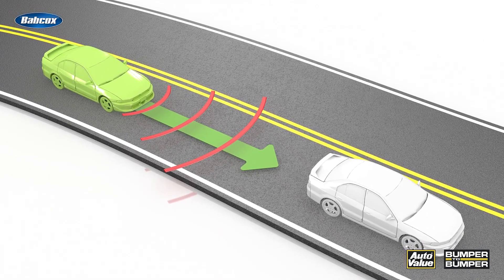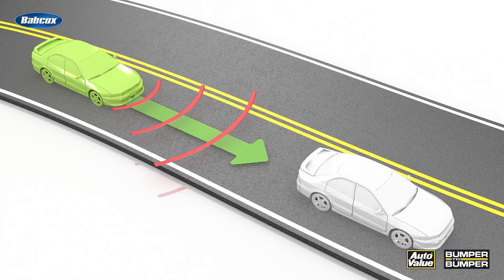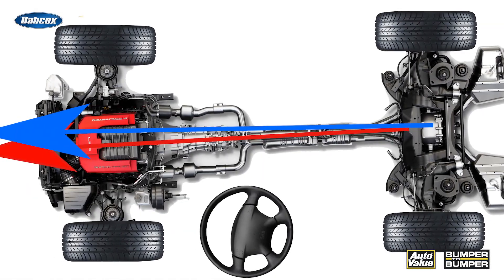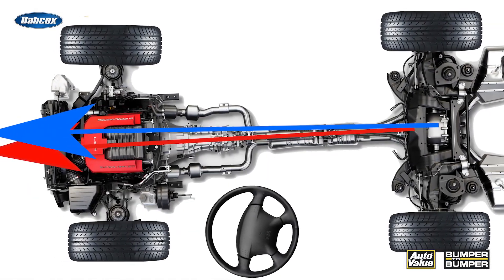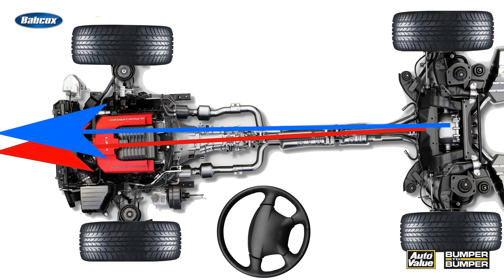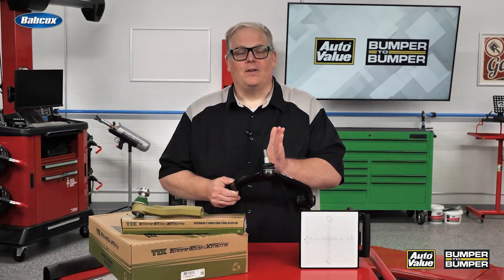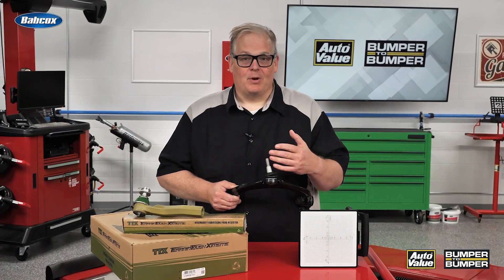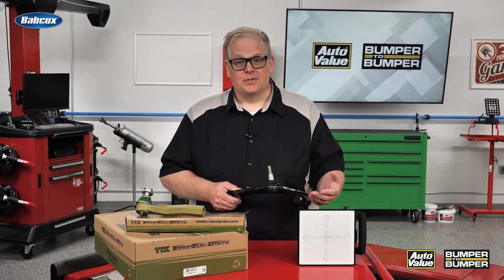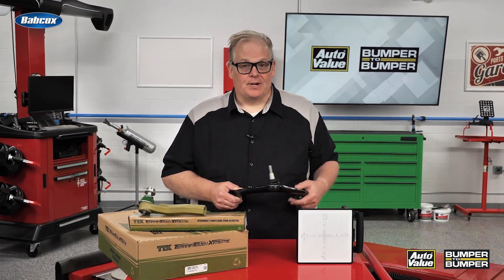If you do not have the right thrust angle, you could wind up having the vehicle canted to one direction. When the vehicle is canted to one direction to make it go straight down the road, that camera could be pointed at bushes, barriers, or other vehicles coming in the opposite direction.